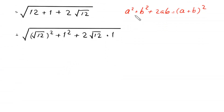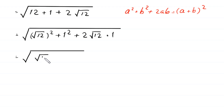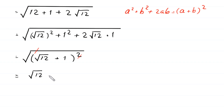Now, by using this algebraic identity, this expression will become square root of (square root of 12 plus 1) whole squared. So this square will be cancelled with this square root, and here we are left with square root of 12 plus 1.